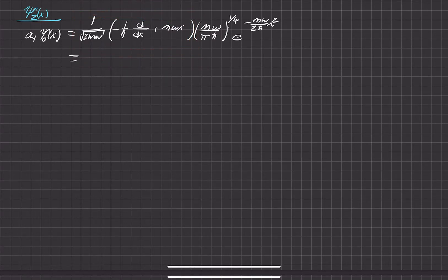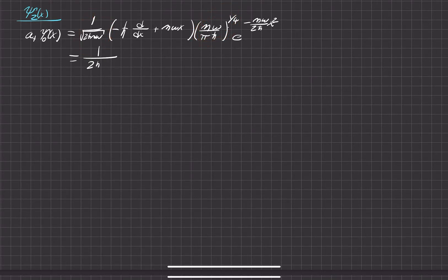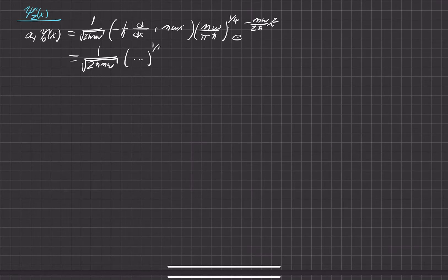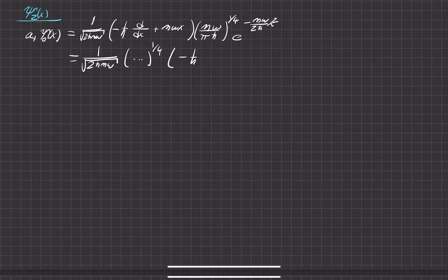If we go ahead and apply that to the ground state, we'll get the first excited state. This is a global constant, and so is that. We'll put one over two h-bar m-omega under the square root, and just to save time I'm going to put dot dot dot for this portion — a very official constant here.